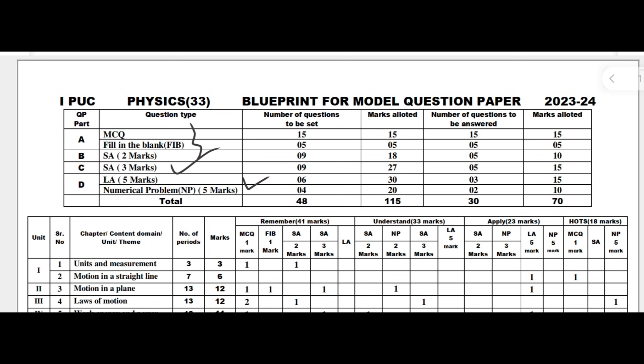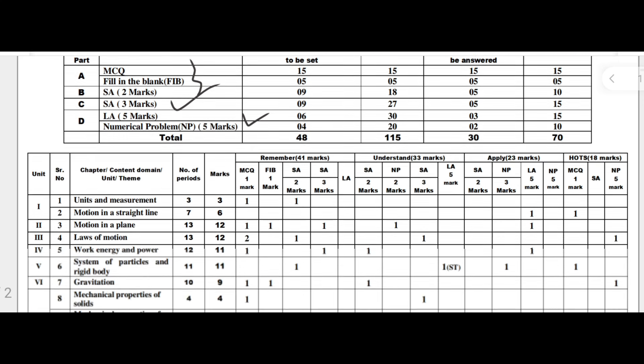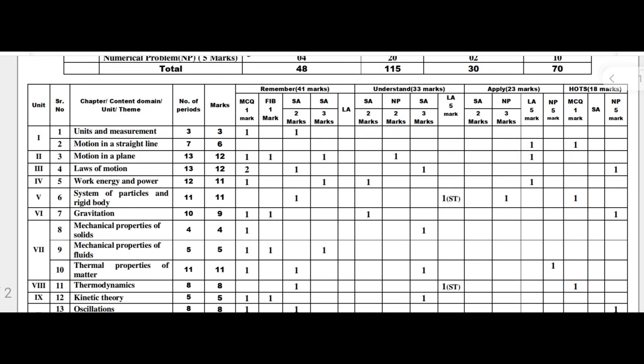Part C includes three-mark type questions and Part D includes five-mark type questions, both derivations and numerical problems. The first chapter is Units and Measurement, with three teaching hours and three marks allotted. This three marks is distributed across sections — one mark for MCQ and two marks for essay type question.